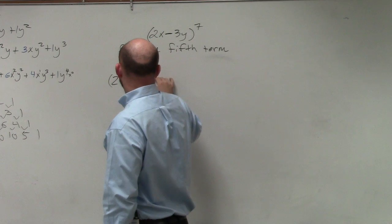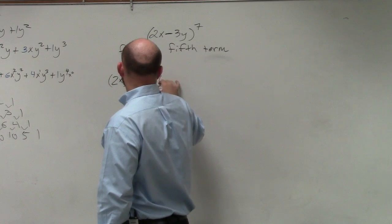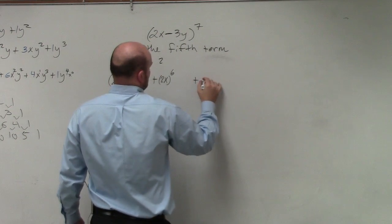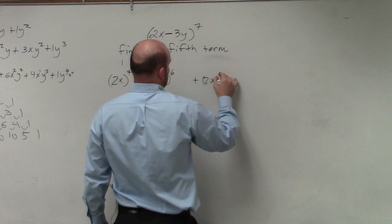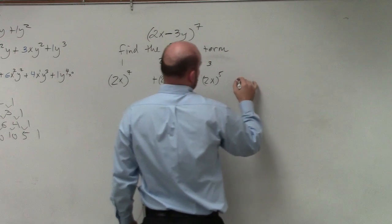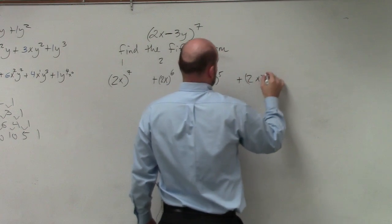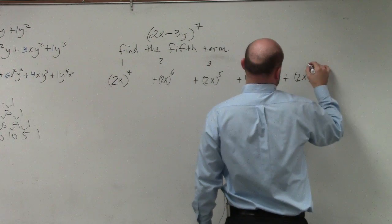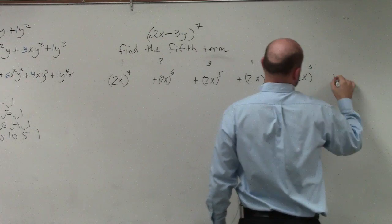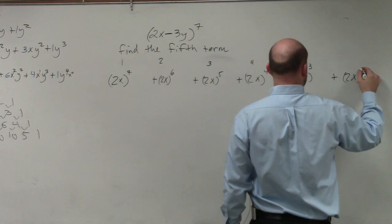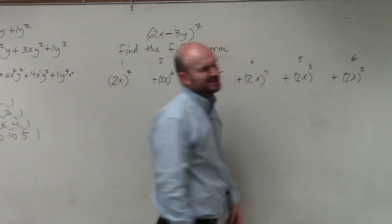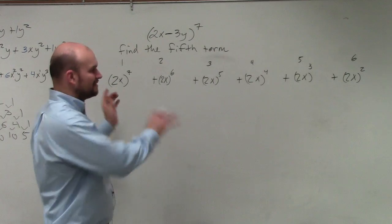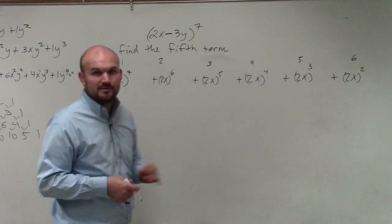Then I know the next one is going to be plus 2x to the sixth. So that's the first, second, plus 2x to the fifth. That's the third, plus 2x to the fourth. That's the fourth term, plus 2x cubed. That's my fifth term. And then plus 2x squared, which is my sixth term. Now again, I could have done this the other way. It would have been probably a little bit quicker going the other way backwards. But we'll just go to make sure you guys can get through the process.